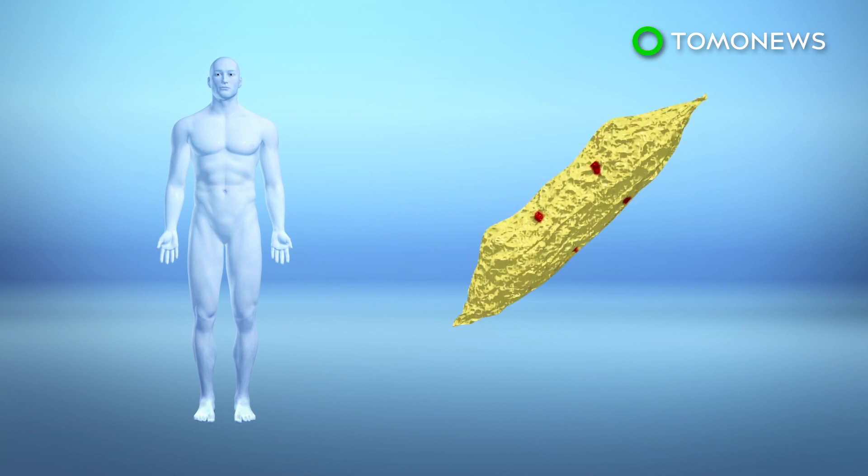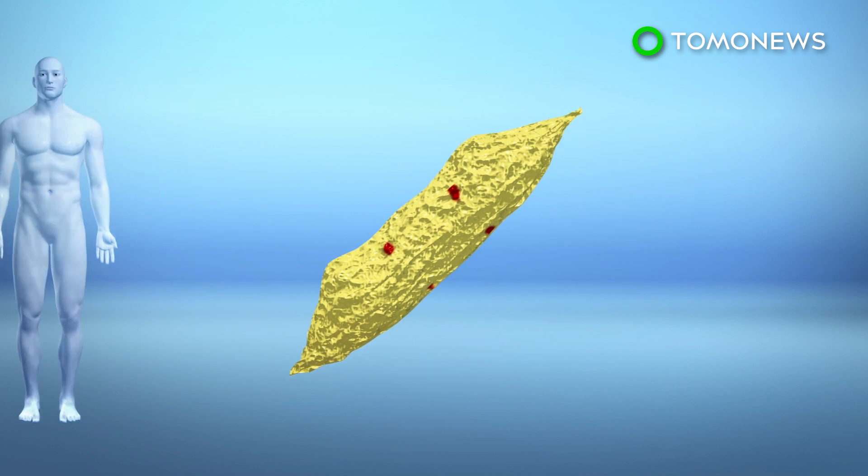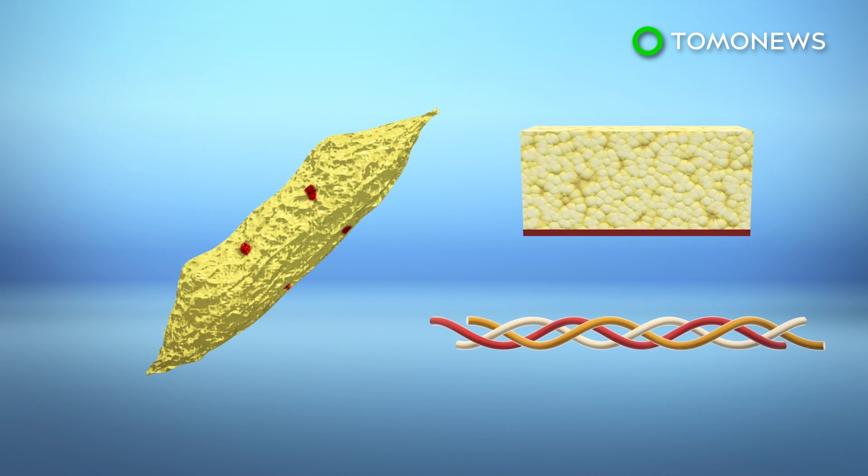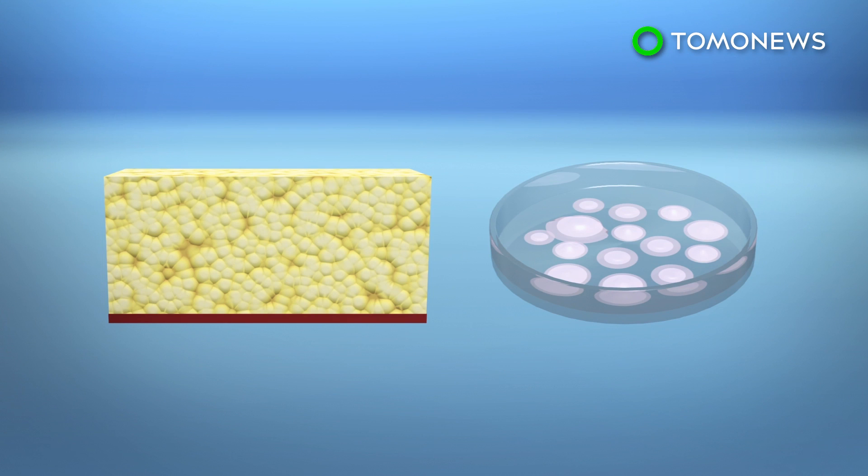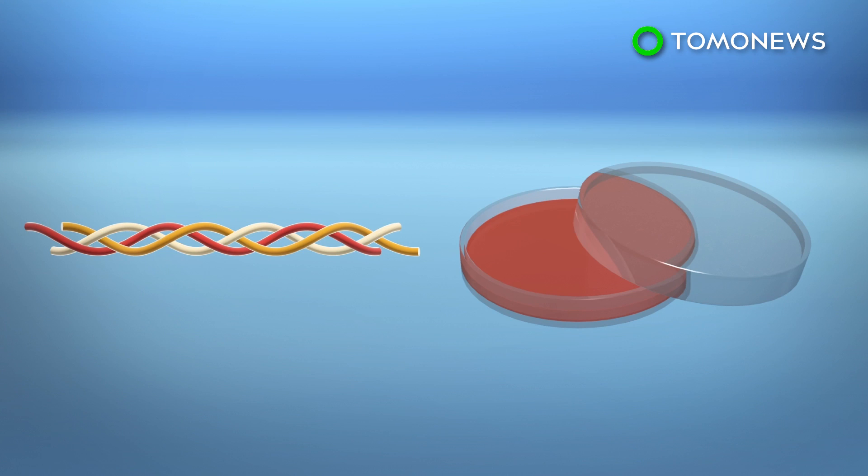The scientists first took a fat sample from a participant and then separated it into cellular and non-cellular materials. The researchers then took the cellular material and turned them into stem cells, which would eventually become heart cells. They also took the non-cellular material and converted it into a hydrogel.